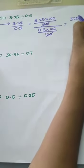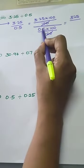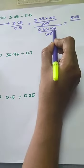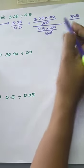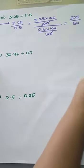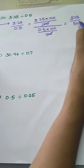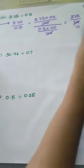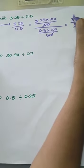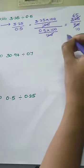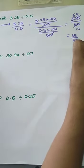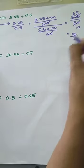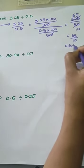The numerator value is 325. For the denominator, multiplying 0.5 by 100 moves the decimal point two places to the right; since we have only one place value, we add an extra zero, giving 50. Now we divide 325 by 50. We cancel using 5: 5 times 65 is 325. That gives us 65 by 10. Dividing by 10 moves the decimal point to the left, so the answer is 6.5.